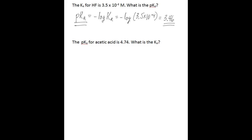The second problem here is the pKa for acetic acid is 4.74. What is the Ka? You're going to use this same relationship that we used for the other problem, except you're going to take the anti-log of pKa.